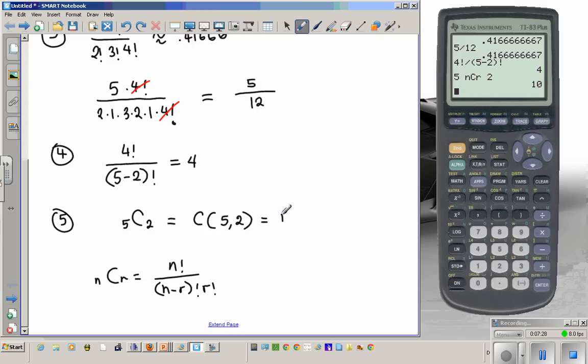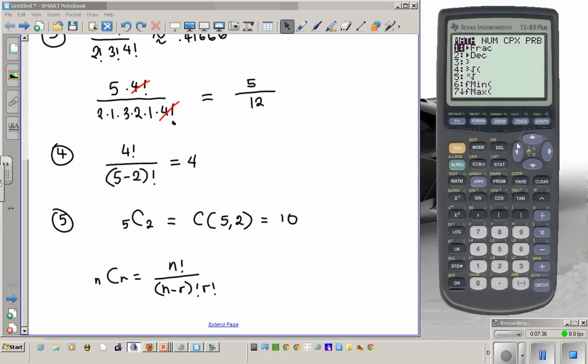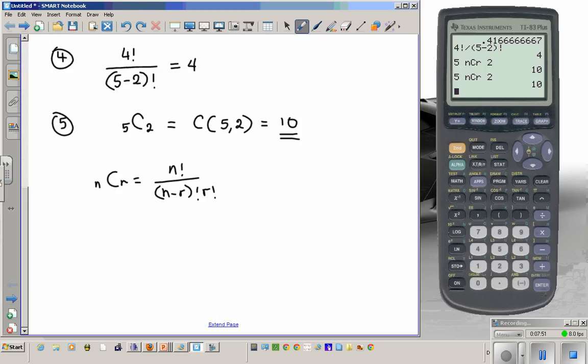Let's do that again. You enter your first number, which is the number that comes first before the C or P. You go to math again, probability, and you select option number 3 because you're doing combination. And then you enter the second number. Bam. So you got 10. Alternatively, you can use this formula to compute the combination. It will take you longer, but this is more accurate and quicker.